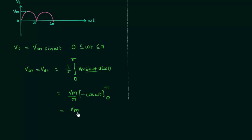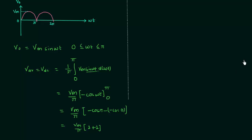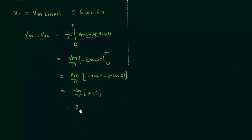Now substituting the limits: Vm/π times [−cos(π) − (−cos(0))]. cos(π) is equal to −1, so −cos(π) gives +1. cos(0) is 1, so −(−1) gives +1. Adding these gives 2, and so we finally get V_average equal to 2Vm/π as the value of average load voltage. This is a very important result that will be used to obtain different parameters in the coming presentations.